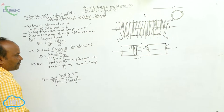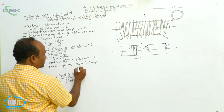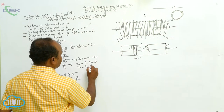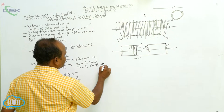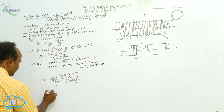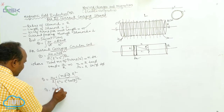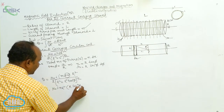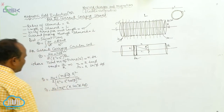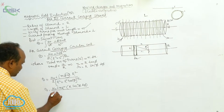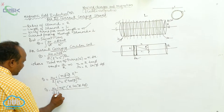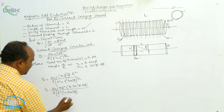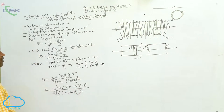Here there is a term dx. On differentiating x = r·tan φ, dx is equal to r·sec²φ·dφ. Now substituting, B equals μ₀·i·n·r² by 2 into r² plus r²·tan²φ, whole to the power of 3 by 2. Taking r² common, this becomes r² into 1 plus tan²φ, whole to the power of 3 by 2.